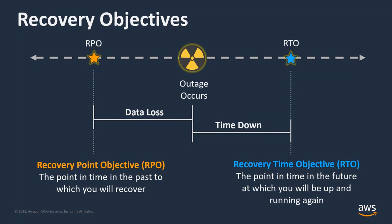A couple of other terms: recovery point objective, or RPO, and recovery time objective, or RTO. RTO indicates how long your system will be down in the case of an outage. RPO indicates how much data you might lose as part of that outage. I'm going to focus a lot on downtime today — which is really RTO — but I'll also call out points where RPO is affected. I'll use a concise diagram to keep track of our progress as we work on making a WordPress instance on LightSail more highly available.